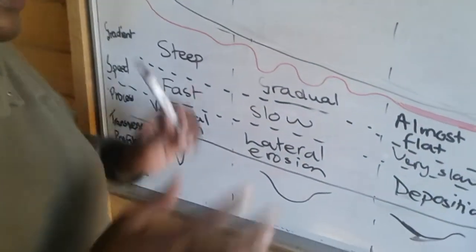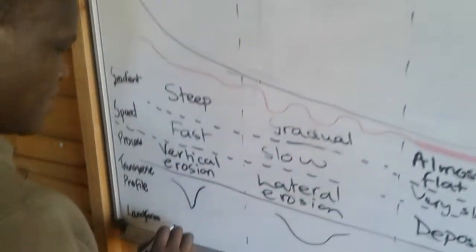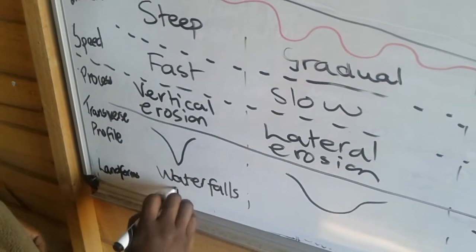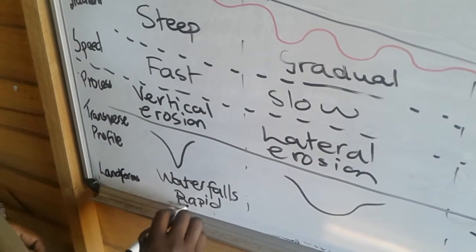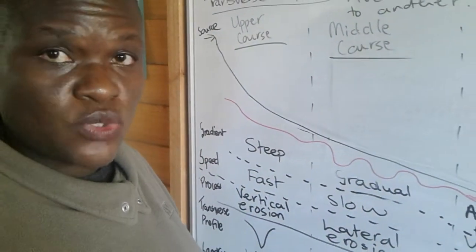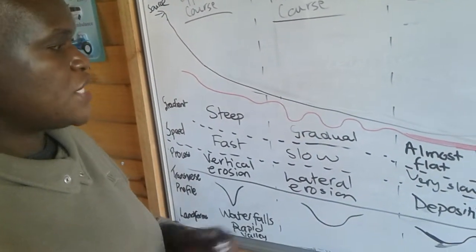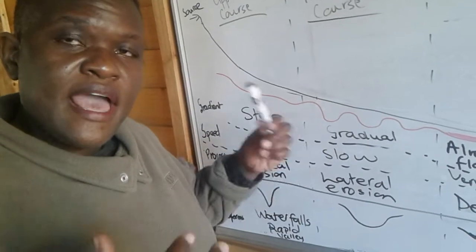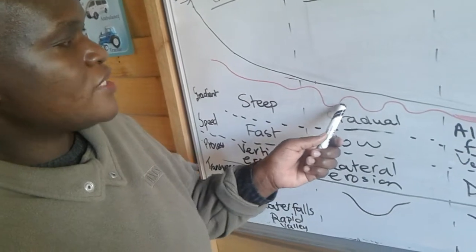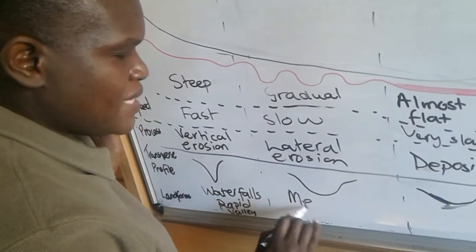In terms of landforms: in the upper course of the river we get waterfalls, rapids, and valleys — because of the steep gradient and the dominant process of vertical erosion. In the middle course, because we now have lateral erosion taking place and the river is bending, this is where we tend to see meanders forming.